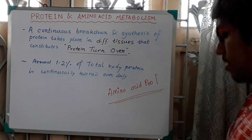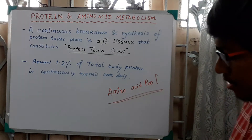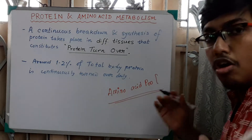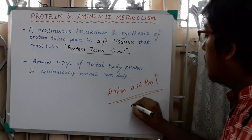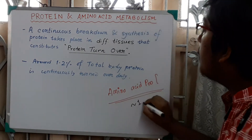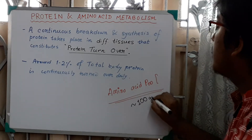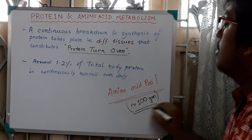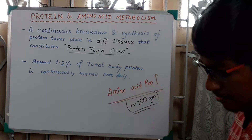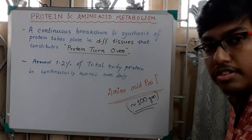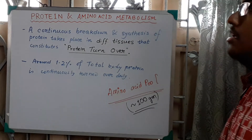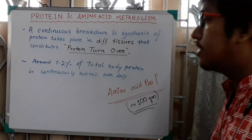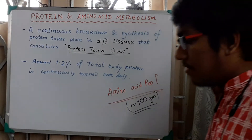This amino acid pool value is almost constant — it is approximately 100 grams in our body. The amino acid pool is constant in our body, almost 100 grams.